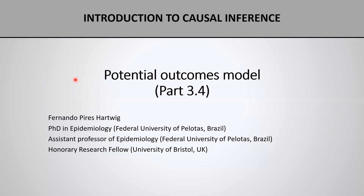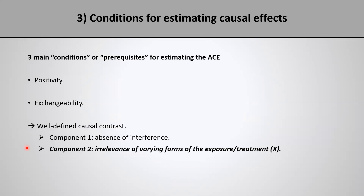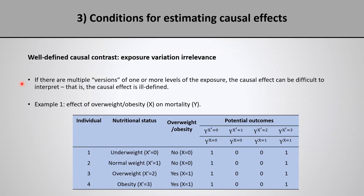Welcome back to our introduction to causal inference course. Today I want to continue our discussion about the required conditions for estimating causal effects. More specifically, I will talk about the second component for a well-defined causal contrast: the assumption of irrelevance of varying forms of the exposure.